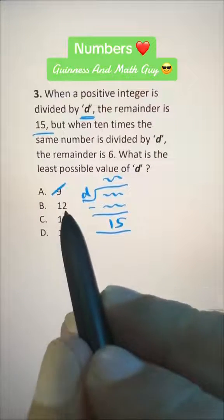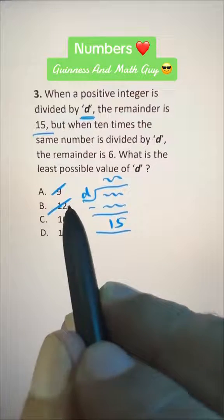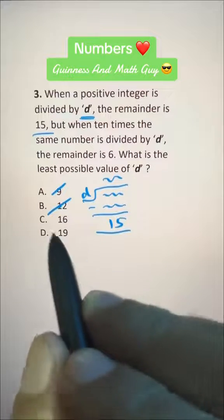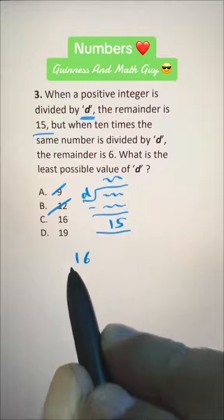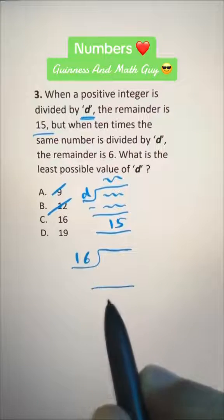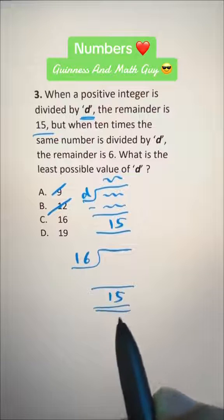So these two choices, A and B, are gone. Let's try 16. If we're dividing any number by 16 and we get remainder 15, let's get the smallest number that gives remainder 15, and it's 31.